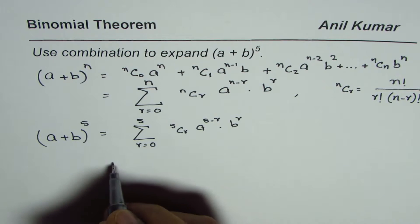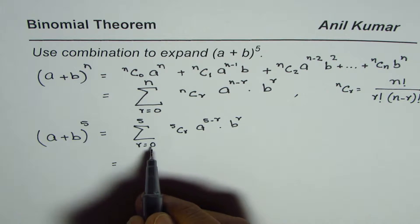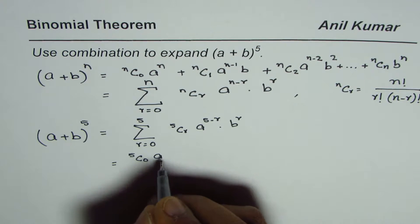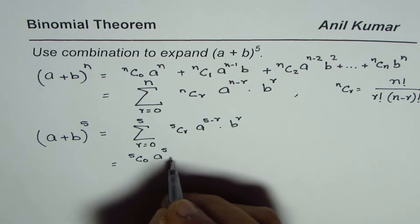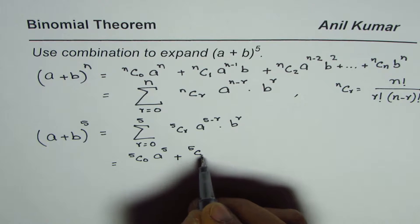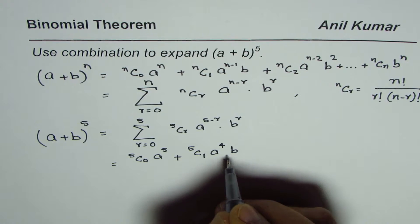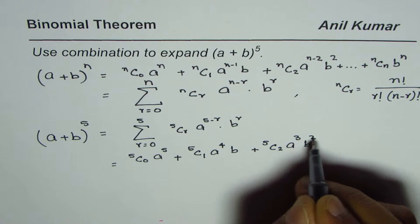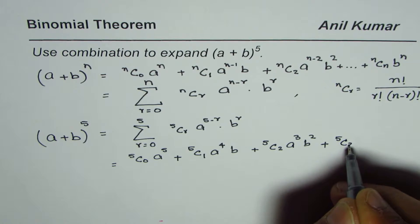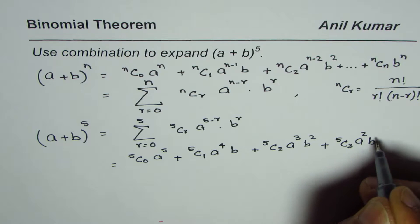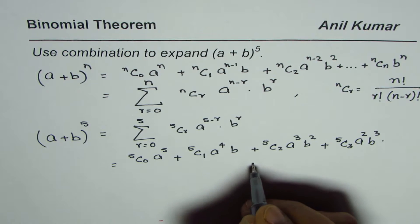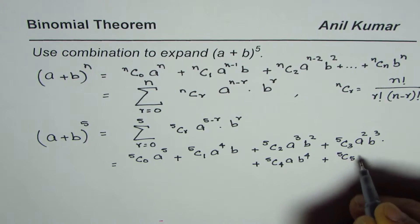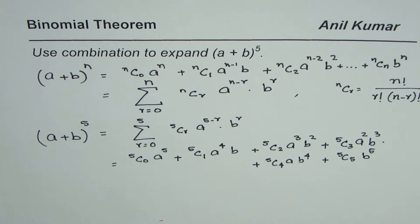In expanded form, replace r from 0 to 5 and add all those terms: 5C0 times a to the power of 5 — anything to the power of 0 is 1, so we are not writing it — plus 5C1 times a to the power of 4 times b, plus 5C2 times a cubed times b squared, plus 5C3 times a squared times b cubed, plus 5C4 times a times b to the power of 4, plus 5C5 times b to the power of 5.